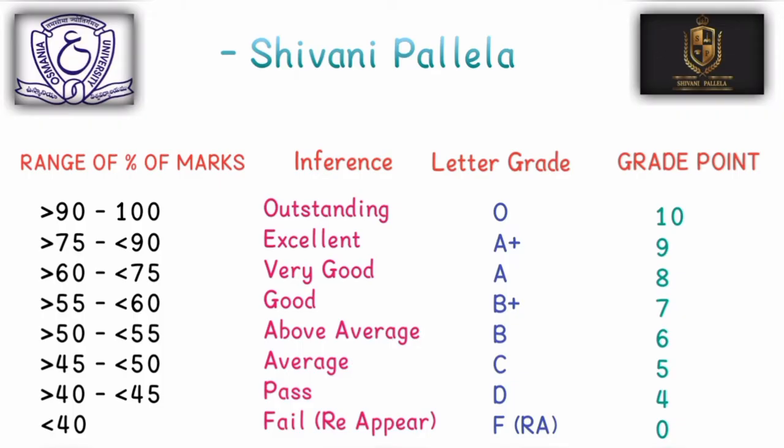The grade ranges are as follows: 75 to 90 is the A-plus grade, and 90 to 100 is the O grade. If you score between 55 and 60 you get a B-plus, and below 50 marks you will be in a lower grade category. Below 40 marks is a fail.